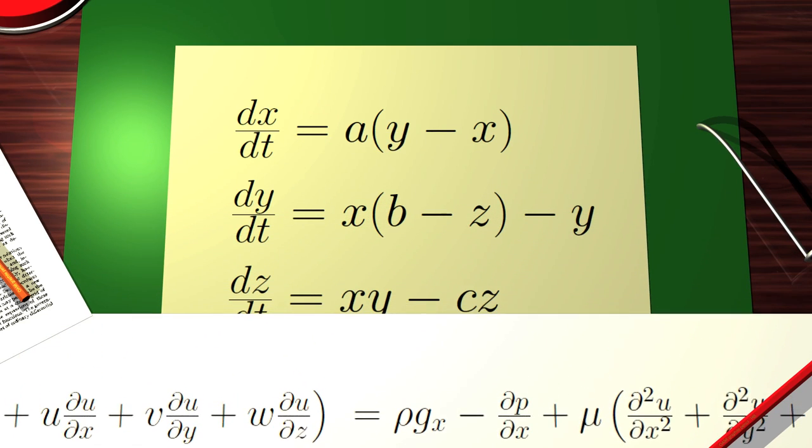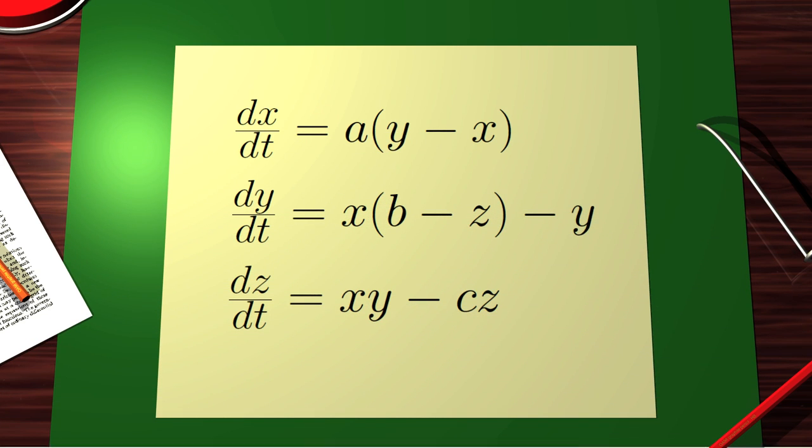His model of the atmosphere was reduced to just three numbers x, y, and z. The evolution of the atmosphere was reduced to a simple equation.